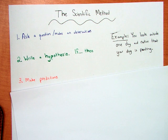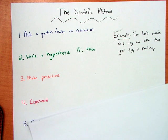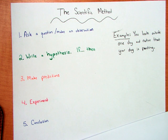Once we've made a hypothesis, we can make predictions. So predictions are what we think is going to happen. Then you follow up with your experiment and finally you draw conclusions. So let's look at an example.